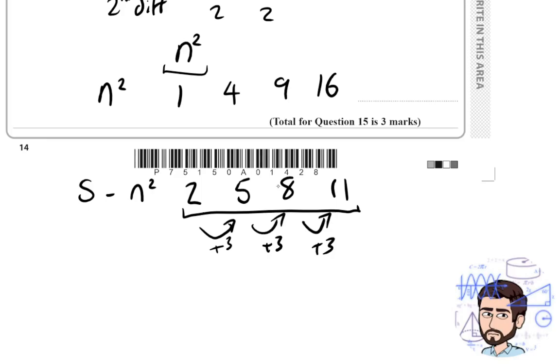Well, it goes up by 3, so it must be 3n. And 3n is the 3 times table: 3, 6, 9, 12. How do I go from 3, 6, 9, 12 to 2, 5, 8, 11? I have to subtract 1. So that is the nth term of this bit: 3n minus 1.